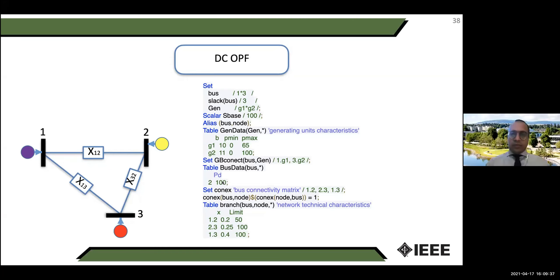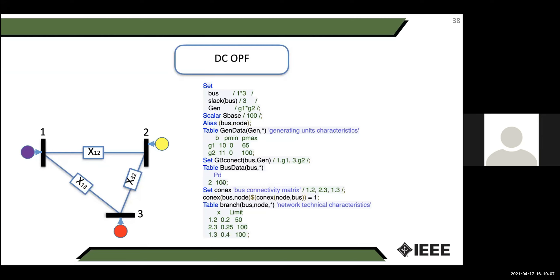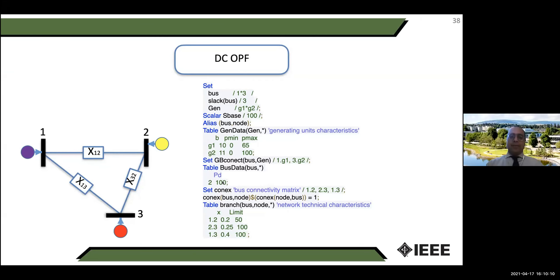One very important point: both GAMS and PyOMO understand nothing about power systems, chemical engineering, mechanical engineering, or any other discipline. They only understand mathematics. Even if you write down formulations in the wrong way, they can't detect it's wrong — they just see mathematical formulas and try to find a feasible solution. It is your role to write down the equations correctly.